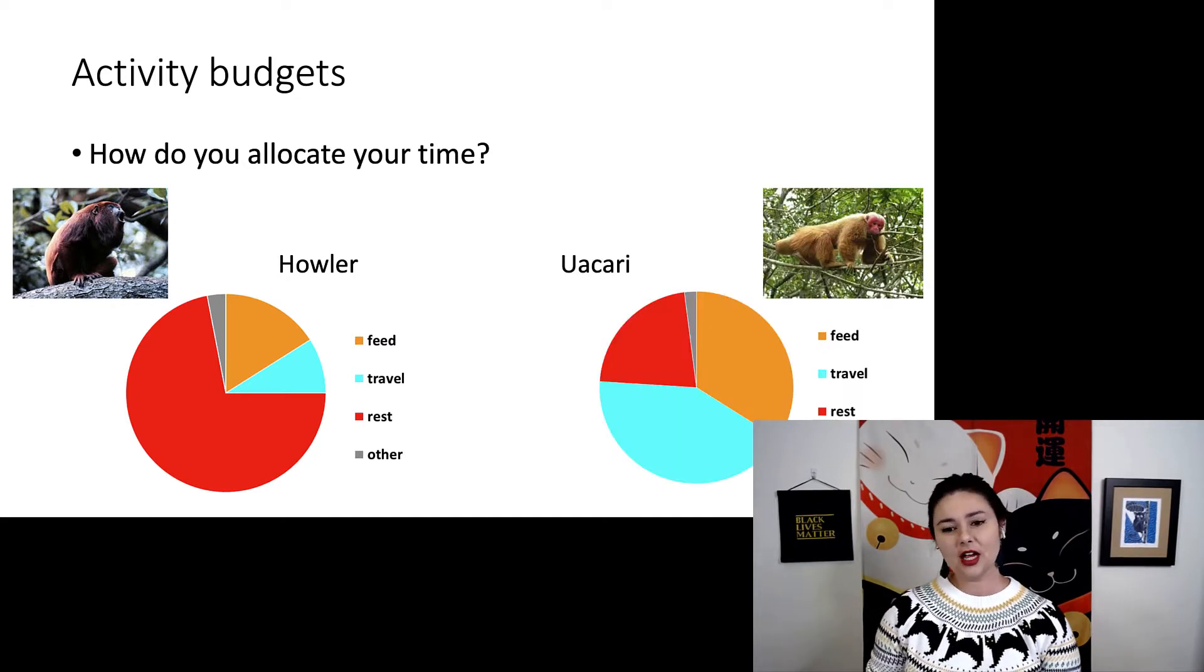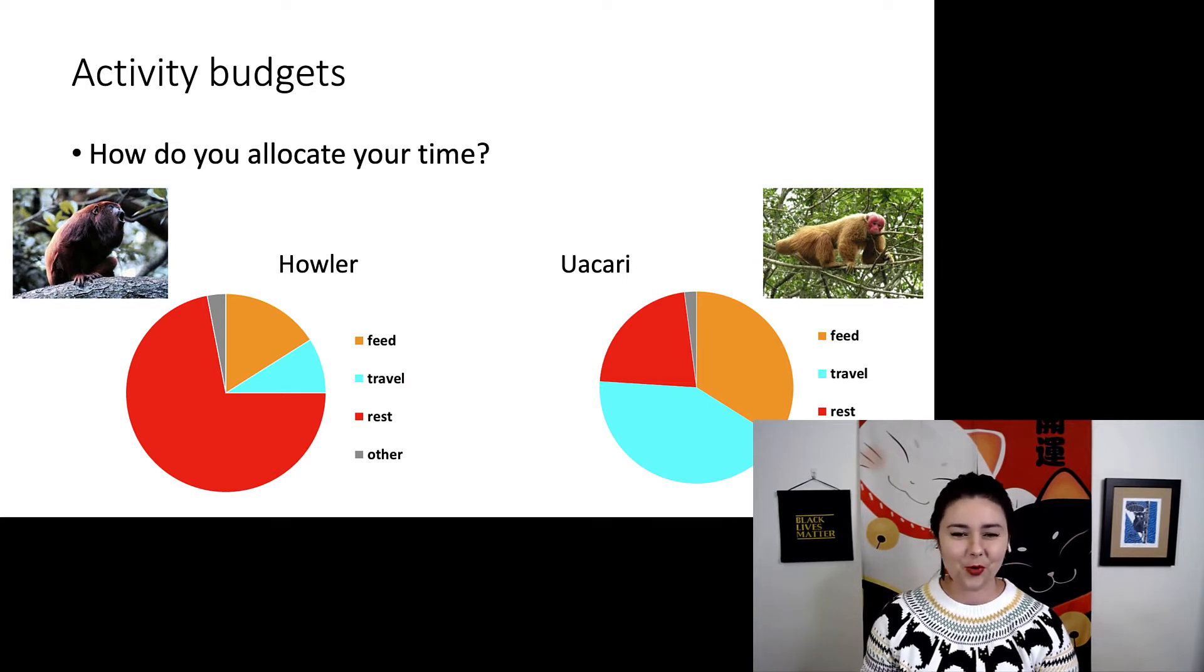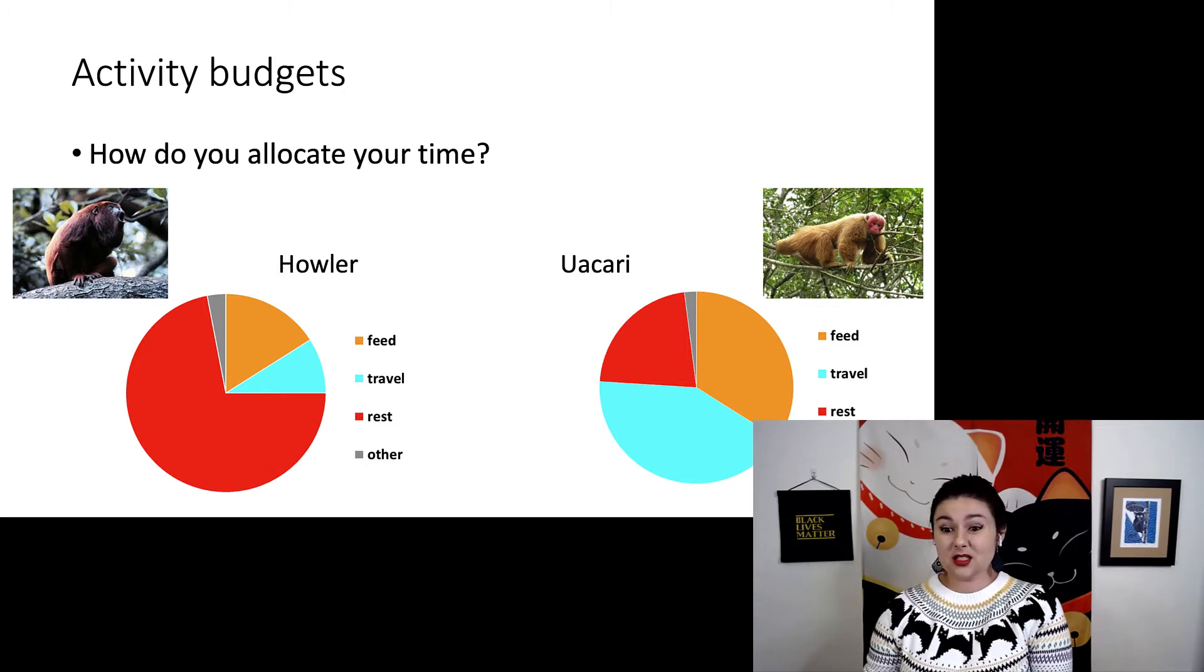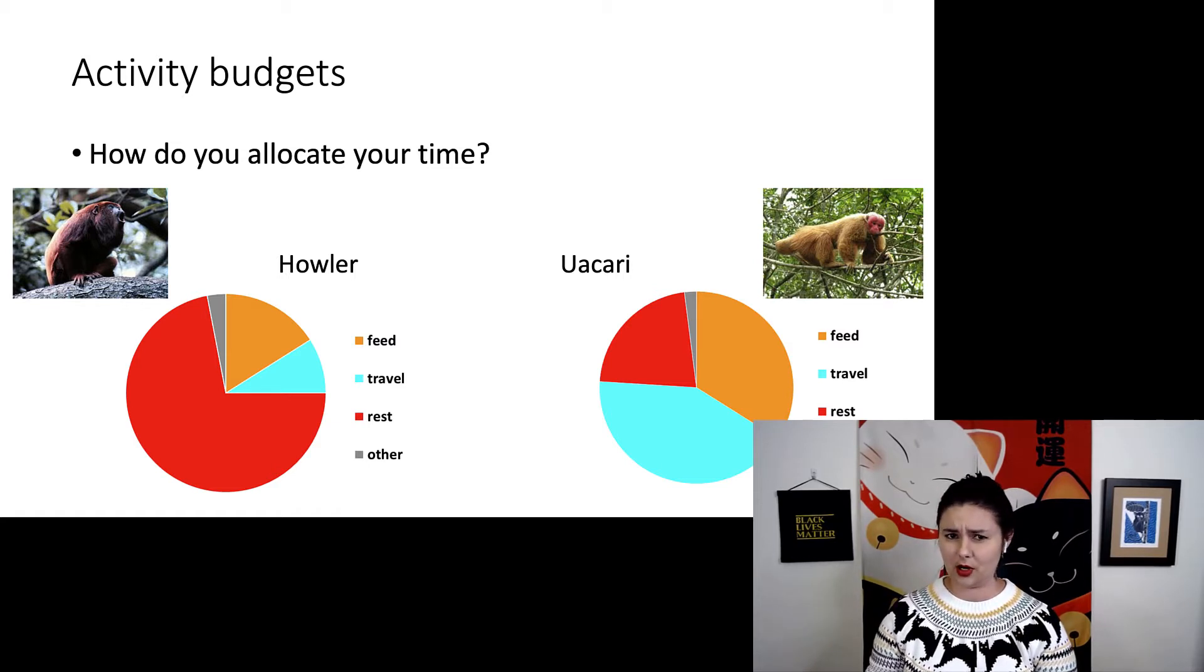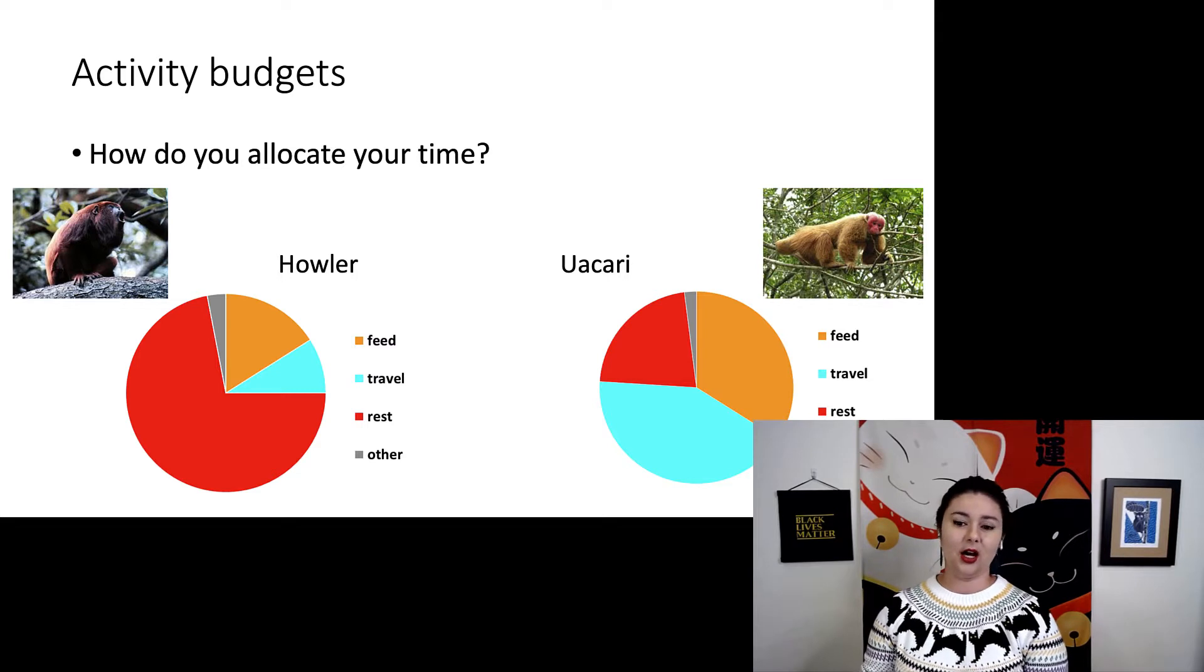On the other hand, now I have a wakari. These are both New World monkeys or platyrrhines. You can see their activity budgets are pretty different. Wakaris don't rest nearly as much, and they actually spend a larger amount of their time traveling and feeding. Do you remember what wakaris eat? These guys eat a lot of nuts and seeds or unripe fruit, so they need to spend a lot of their time traveling and finding that food.